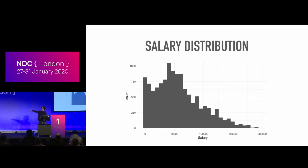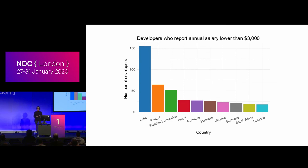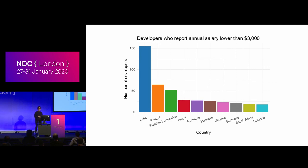That spike represents developers who report being paid basically nothing annually. I zoomed in and plotted countries where developers report annual salaries below $3,000 — about $250 a month. The first was India, not a particularly rich country, maybe expected. The second was Poland. But Germany also appeared — and Germany is definitely not a country where developers earn $250 per month. So what's happening here?